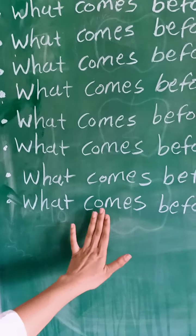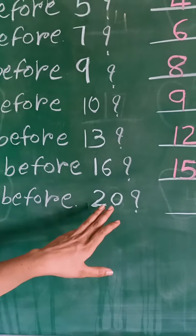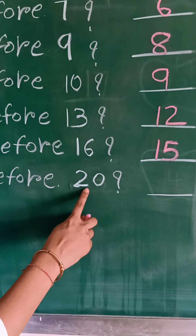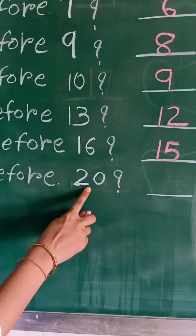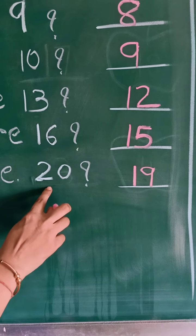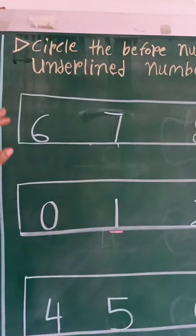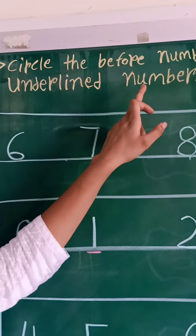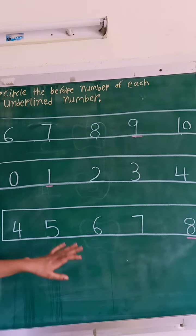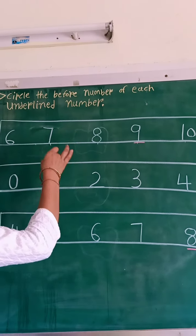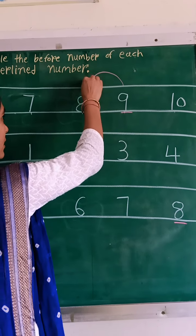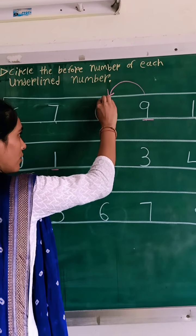Next and last one — what comes before 20? We speak 11 to 20 numbers: 11, 12, 13, 14, 15, 16, 17, 18, 19 and 20. Which number we speak before 20? Number 19. 19, 20. Next question: circle the before number of each underlined number. Your number is 9 — which number comes before 9? Number 8. So circle on number 8.